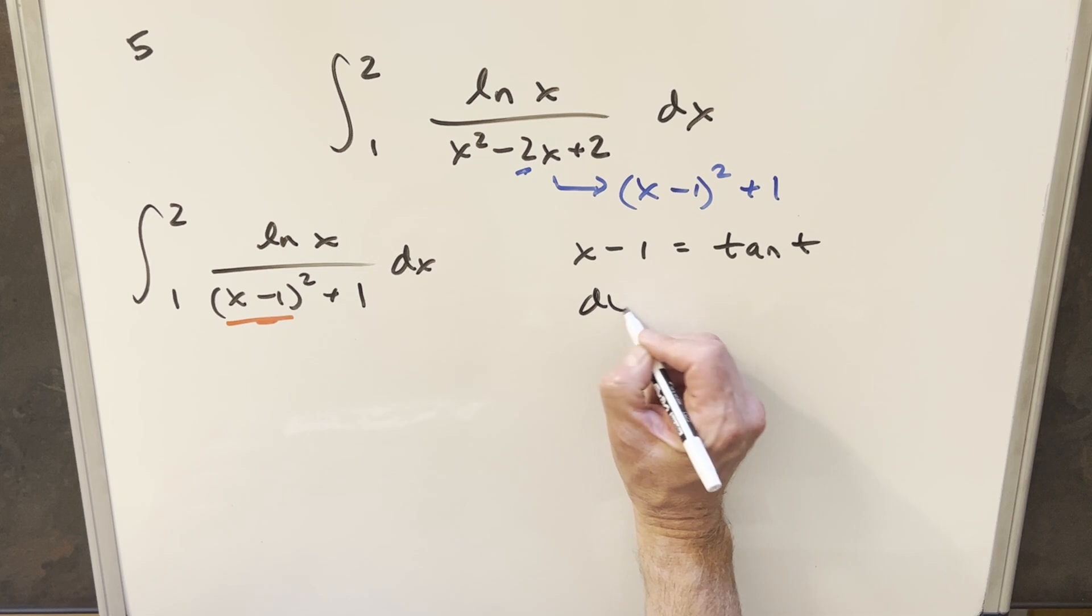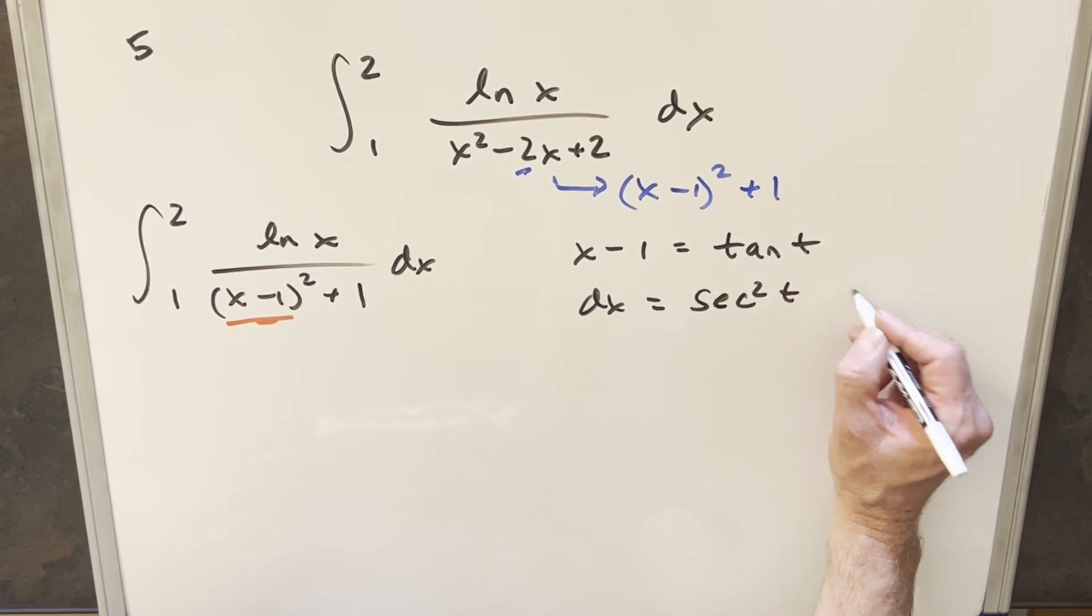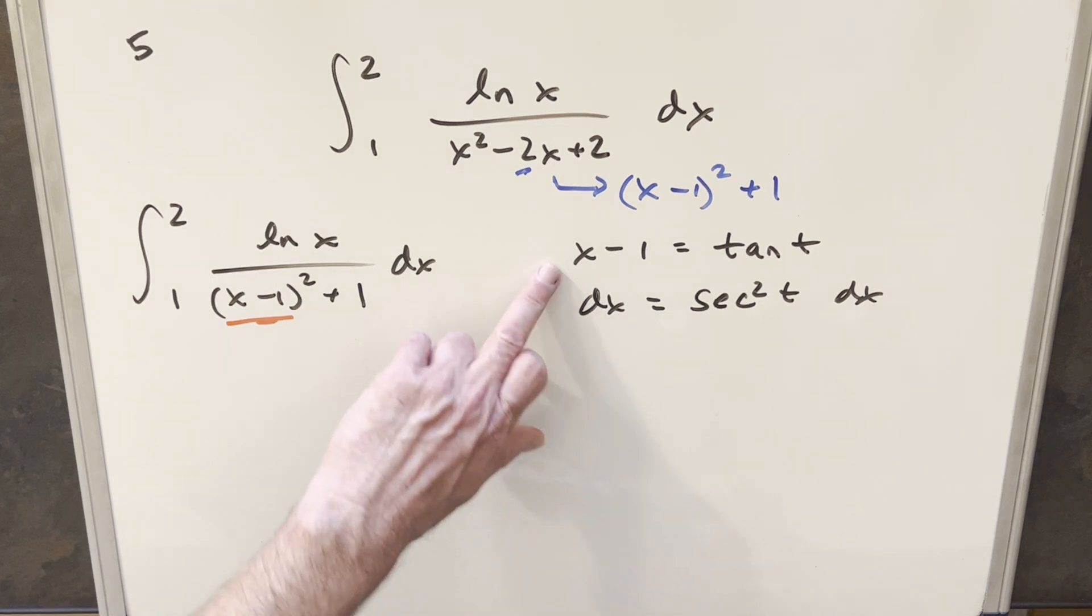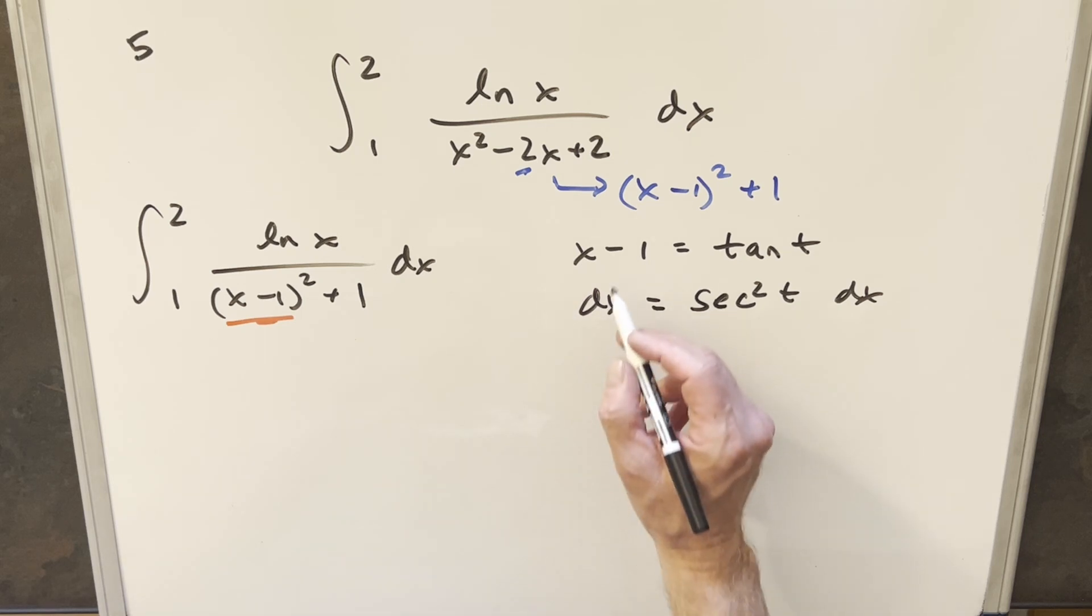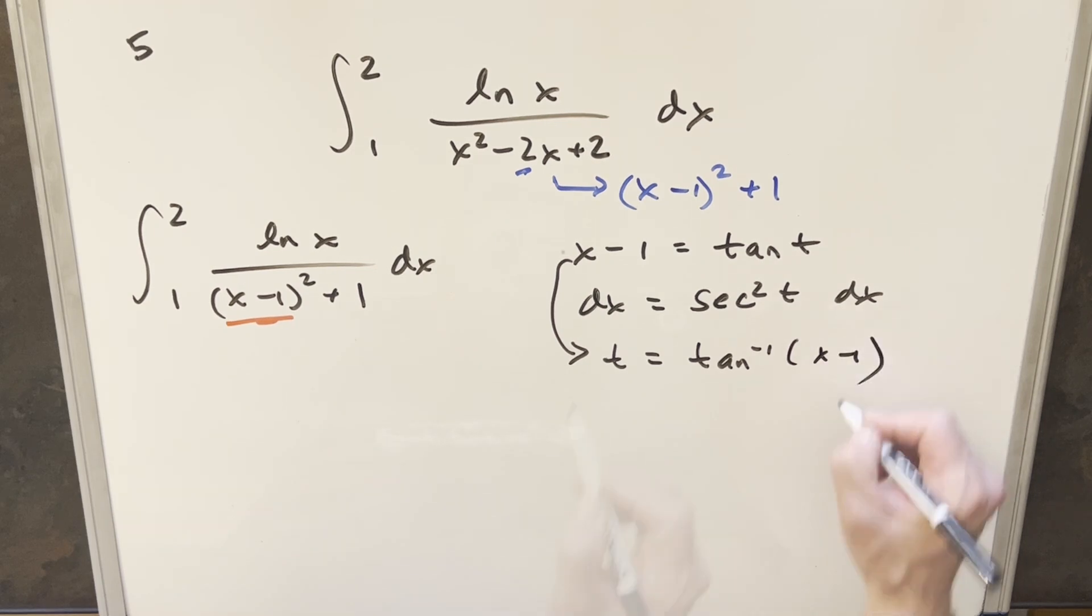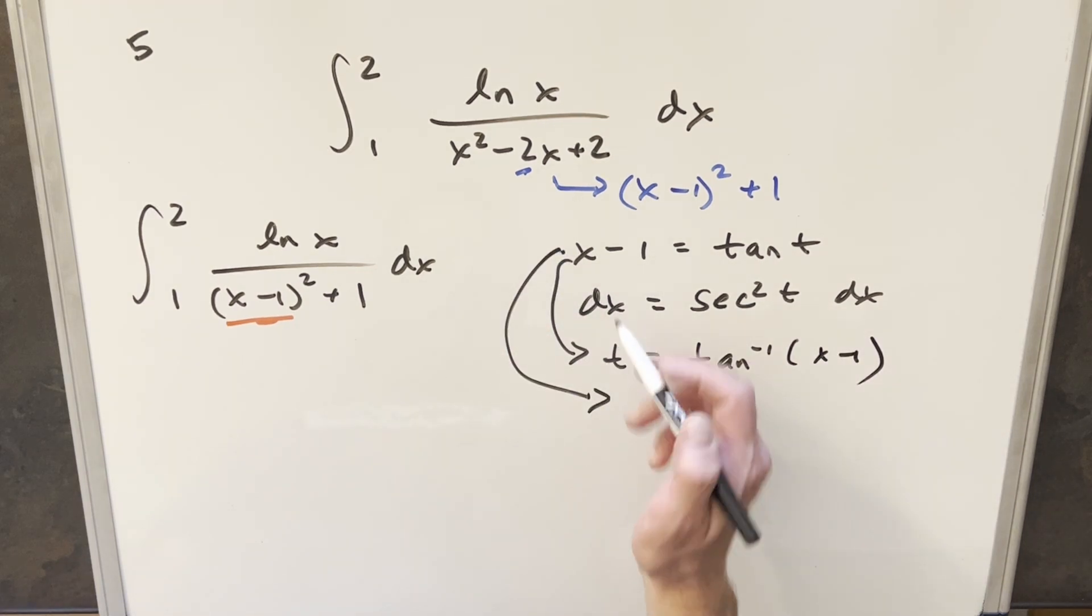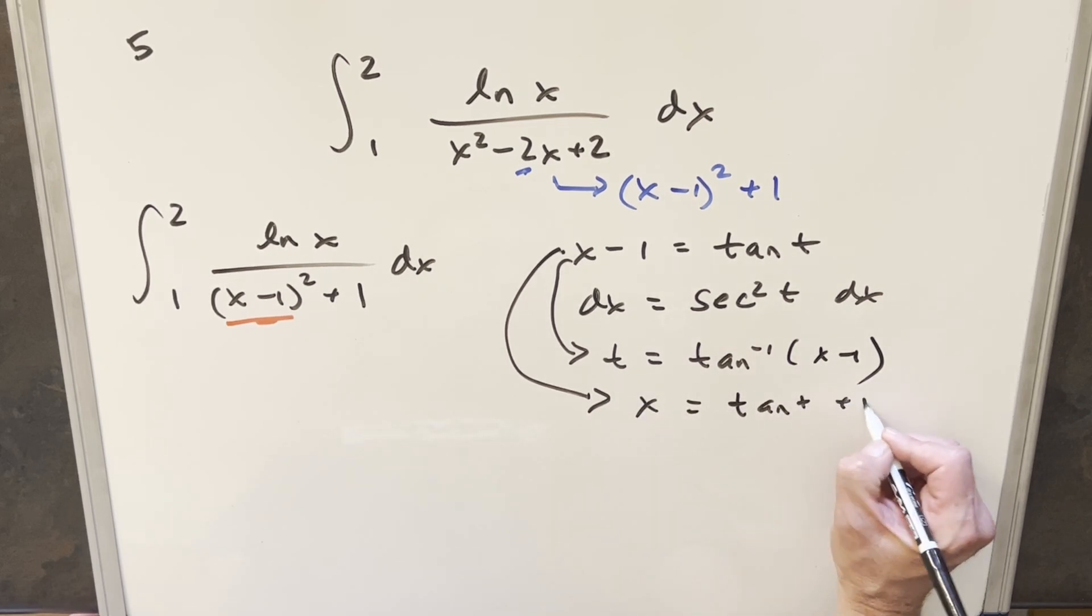I can take a derivative here, so dx is going to be just secant squared t dt. Now I'd like to get a couple other values too. First, we're going to want a value for t. So just applying arctan on both sides to isolate t, we're going to have t equals arctan x minus 1. And then also let's just isolate x. If we just add a 1 on both sides, we have x equal to tan t plus 1.